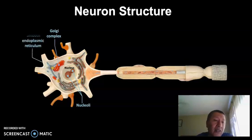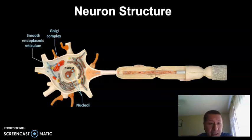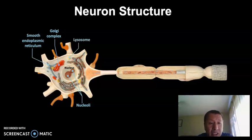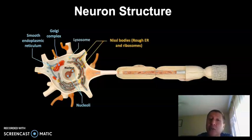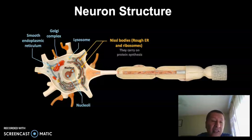Therefore, it's going to have a nucleus, a Golgi complex, a smooth endoplasmic reticulum, lysosomes. It has a special group of rough endoplasmic reticulum and ribosomes. They are going to be called the Nissl bodies.